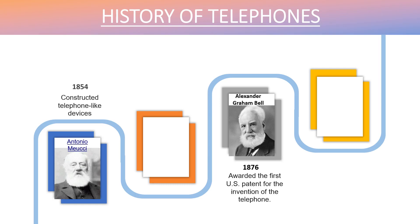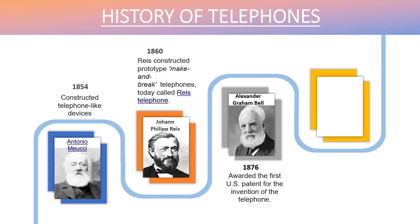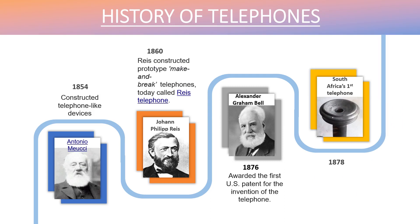A couple of years thereafter, Johann Philipp Reis constructed a prototype make-and-break telephone that is today called the Reis telephone. It was not complete — it still lacked something — which in 1876 Graham Bell perfected, and he came up with the first operational telephone.